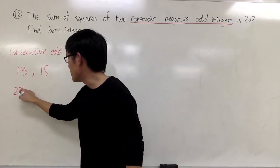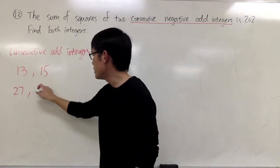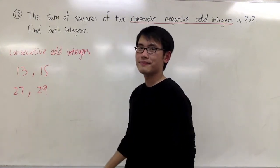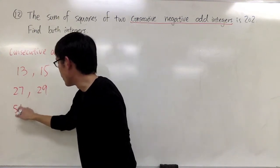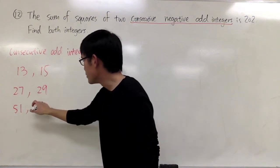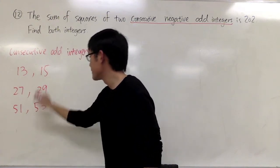I can also have, let's say, 27 and the next one will be 29. I can also have 51, the next odd integer will be 53, just like that.